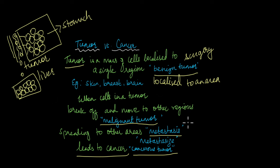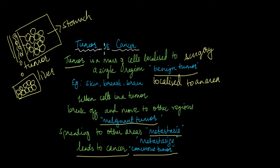Malignant tumours are more difficult to treat than benign tumours. You will require a lot of different treatments to treat malignant tumours, and some advanced cases are also untreatable. This is the basic difference between a tumour and cancer: a benign tumour is localized to a single region, while a malignant or cancerous tumour is when the benign tumour spreads to different parts of the body.